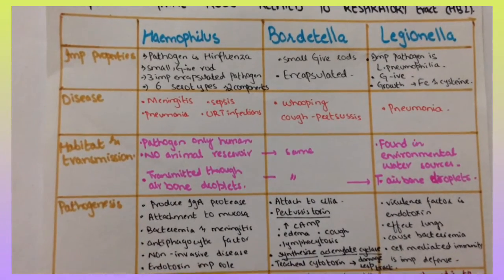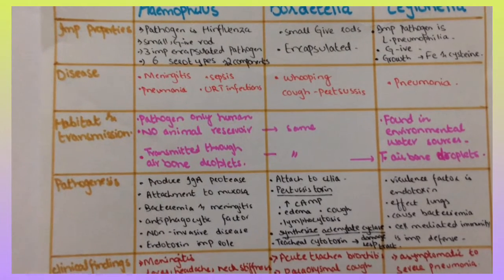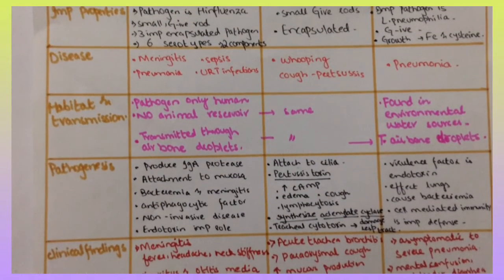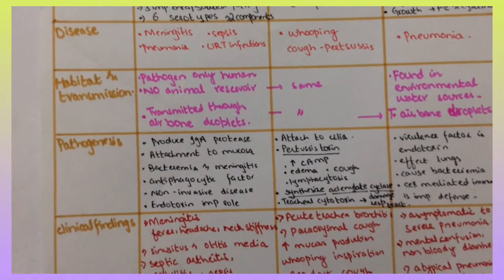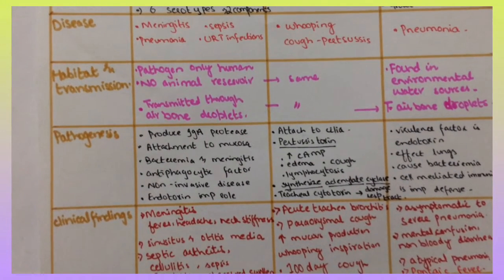Haemophilus pathogenesis is that it produces IgA protease, hence facilitates attachment to mucosa, organism enters the blood causing bacteremia and causes meningitis. Capsule acts as antiphagocytic factor. Non-encapsulated strain causes non-invasive disease as sinusitis, otitis media and endotoxin also plays a role in pathogenesis.